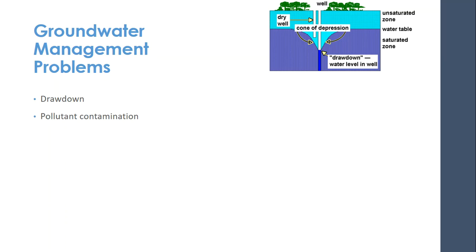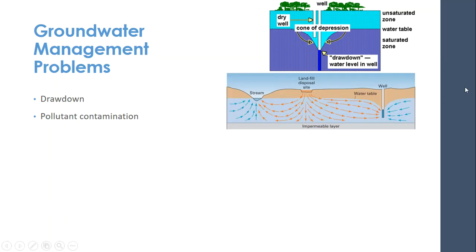We can also have problems with pollutant contamination. If there's a landfill site nearby, landfills are generally lined so that leachate — what you can think of as garbage juice — doesn't leak out, because it can be quite toxic. But landfills will often leak: that impermeable barrier will somehow get a hole in it and then get into the groundwater, pollute people's wells, and pollute streams.